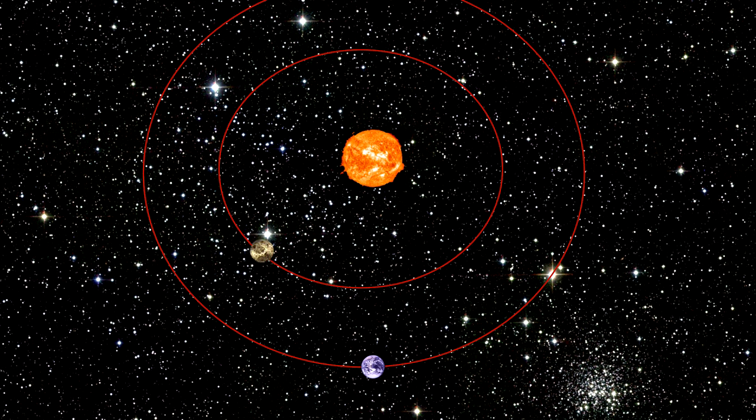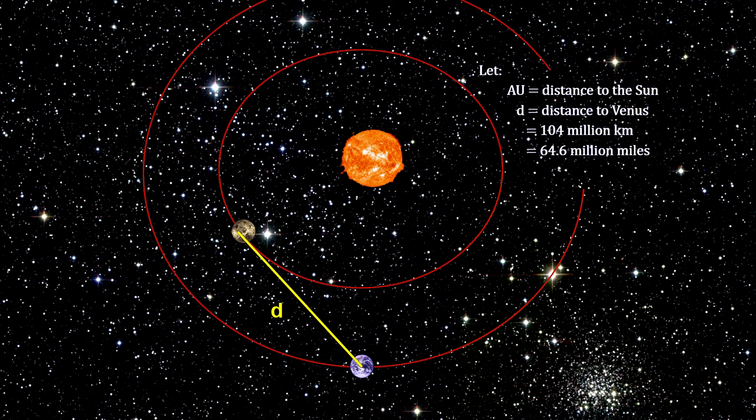By making observations of Venus in the sky, one can determine the point of greatest elongation. At this point, the distance between the Earth and Venus can be determined by parallax at 104 million kilometers, or 64.6 million miles.